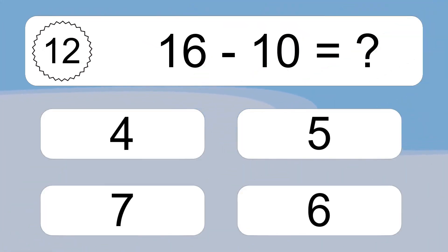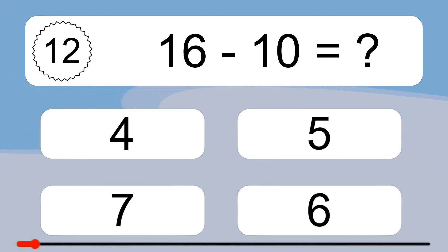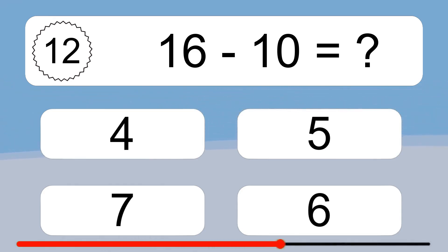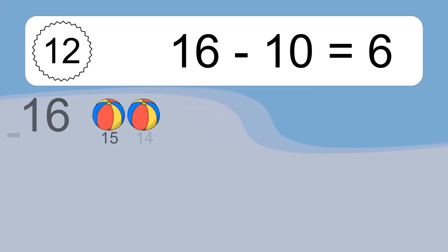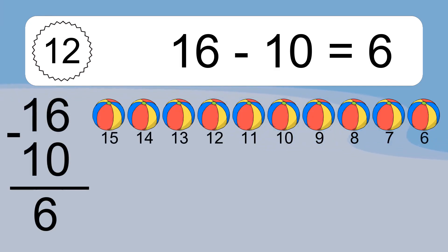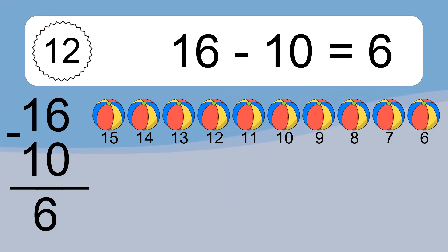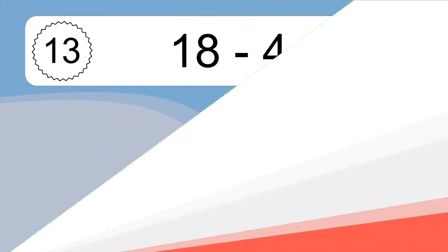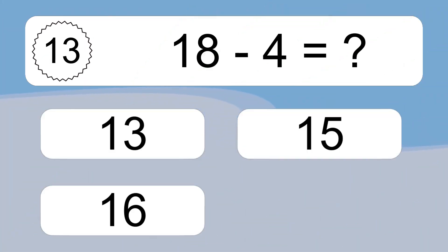16 minus 10 equals what? 16 minus 10 equals 6. Let's count it. 15, 14, 13, 12, 11, 10, 9, 8, 7, 6.